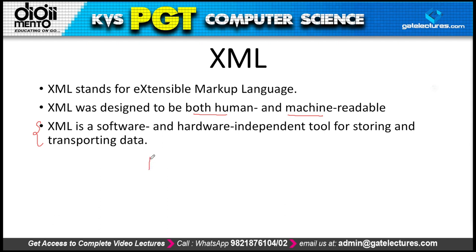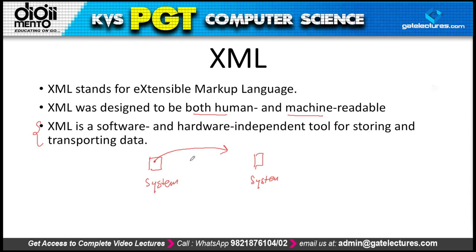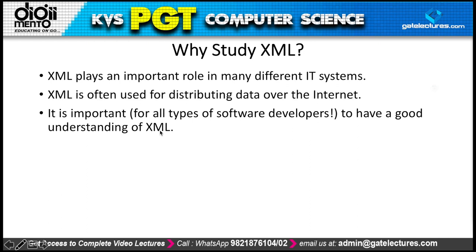What exactly is XML? Assume that we have one system here and another system here. When you transfer data from this system to that system - and when I say system it can be anything: a computer system, databases, online web pages, etc. - we need some language so that when we transport data from one place to another, that data should be readable in both places equally. Both places should know what kind of data is being transmitted and what the elements in that data are.